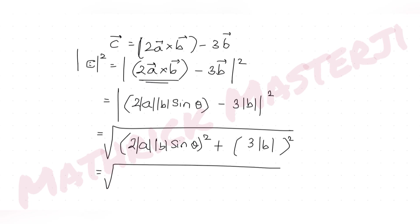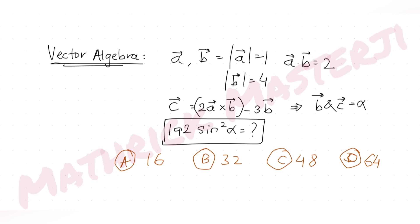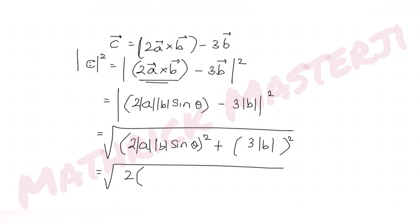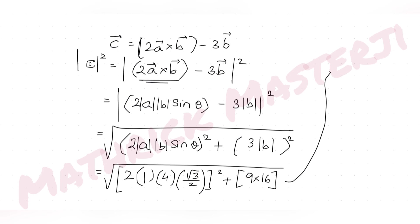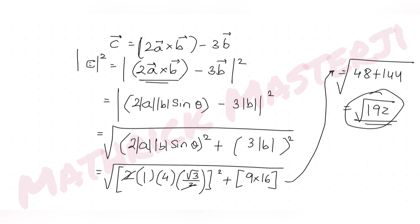Substituting |a| = 1, |b| = 4, and sinθ = sin60° = √3/2: the first term is (2 × 1 × 4 × √3/2)² = (4√3)² = 48. The second term is (3 × 4)² = 144. So |c|² = 48 + 144 = 192.